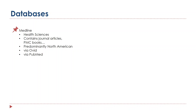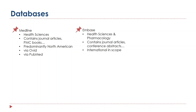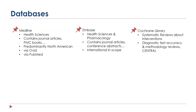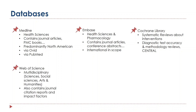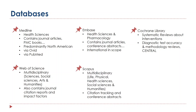We have Medline, a health sciences database containing journal articles and PubMed Central books, predominantly North American in scope, accessible via the platforms Ovid and PubMed. There's Embase, a health sciences and pharmacology database containing journal articles, conference abstracts, and more — international in scope. There's the Cochrane Library, which has systematic reviews about interventions, diagnostics, test accuracy, and methodology reviews, and also includes the Cochrane Central Register for Controlled Trials updated monthly. Web of Science is a multidisciplinary database covering sciences, social sciences, arts, and humanities, and contains journal citation reports and impact factors. Scopus is similar to Web of Science — multidisciplinary with citation tracking and conference abstracts. And there is CINAHL, the Cumulated Index to Nursing and Allied Health Literature, a nursing and allied health professionals database that also contains evidence-based care sheets.